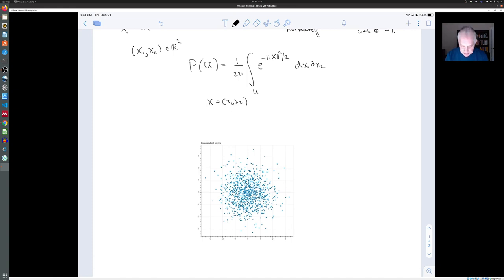And as you can see, the points are clustered around (0,0), but they're spread out in roughly a circle. And that's because the level curves of this probability measure are circles.